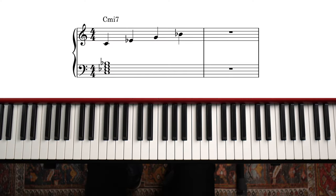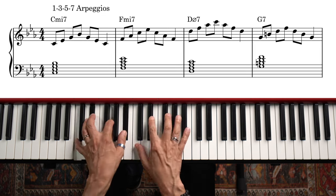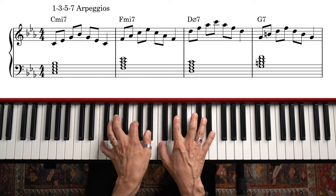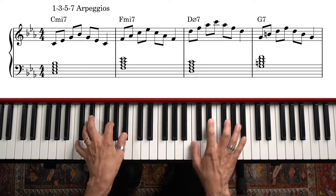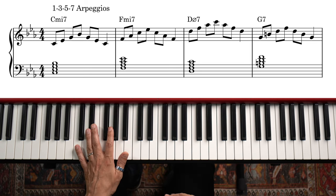The chord shape approach is the easiest to apply. All we need to do is use the root, third, fifth, and seven, or six if it's a sixth chord, of each chord. We can start out by just playing the arpeggios in root position like this, and so on.